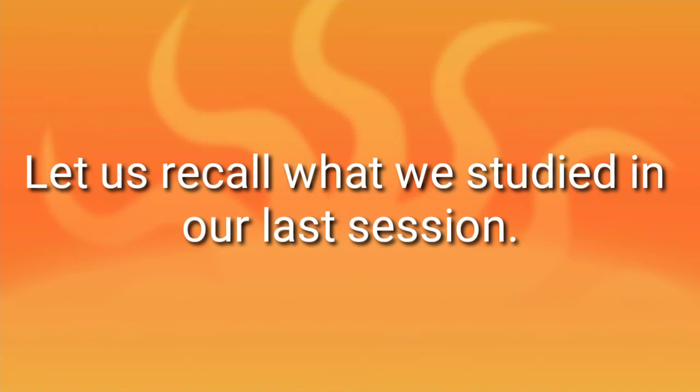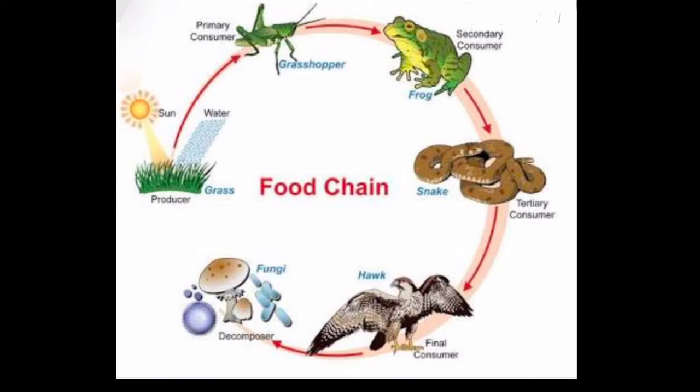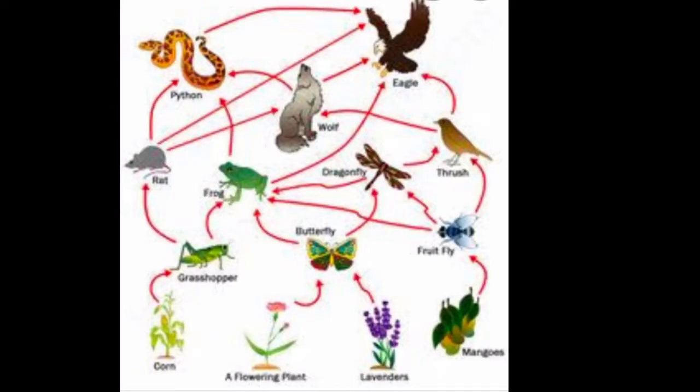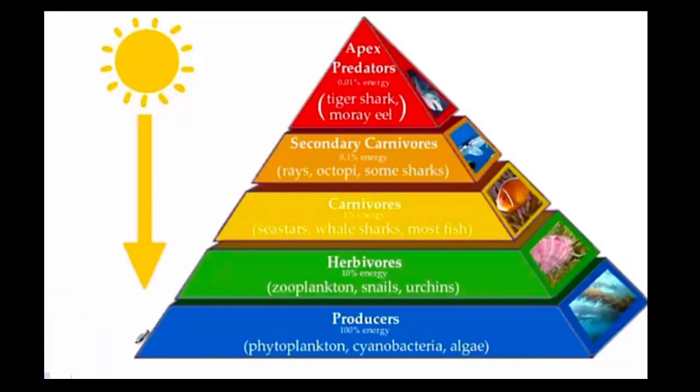Let us recall what we studied in our last session. This is a food chain. In this food chain we can easily see how each animal is dependent on another animal. And this is a food web, where every animal is food for one or more animals.